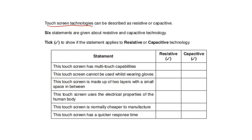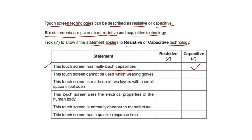Touchscreen technologies can be described as resistive or capacitive. Six statements are given about resistive and capacitive technology. Tick to show if the statement applies to resistive or capacitive technology. This touchscreen has multi-touch capability — that is capacitive. This touchscreen cannot be used while wearing gloves — that is also capacitive.